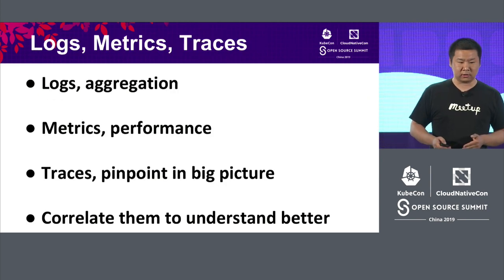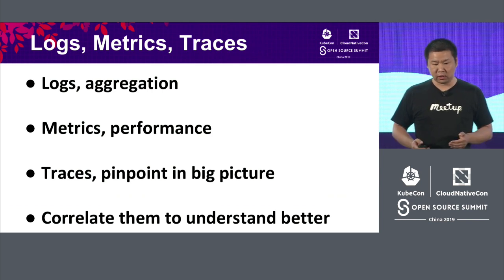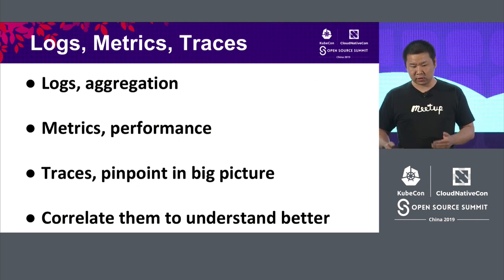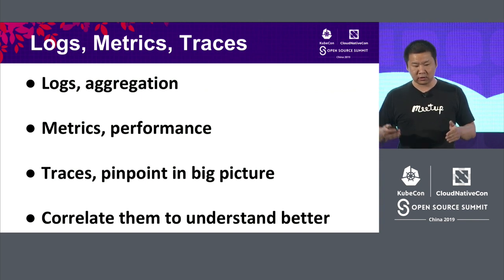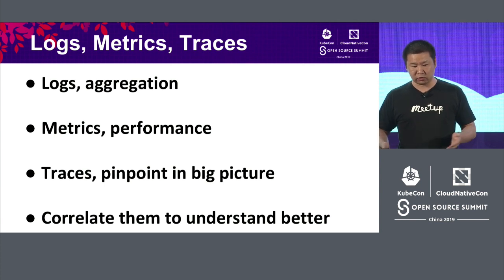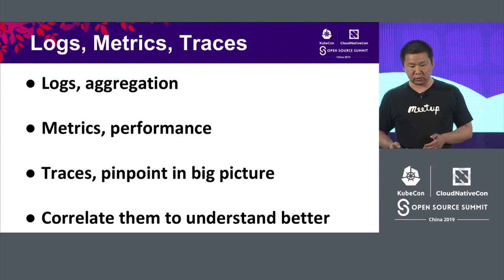The final piece I want to talk about is logs, metrics, and traces. Logs are about aggregation and time-series views. Metrics are about performance — testing a certain piece of function code. Traces are an easy way to pinpoint different transactions across microservices in the large picture. We also leverage traces between front-end and back-end so we can identify issues for the users.